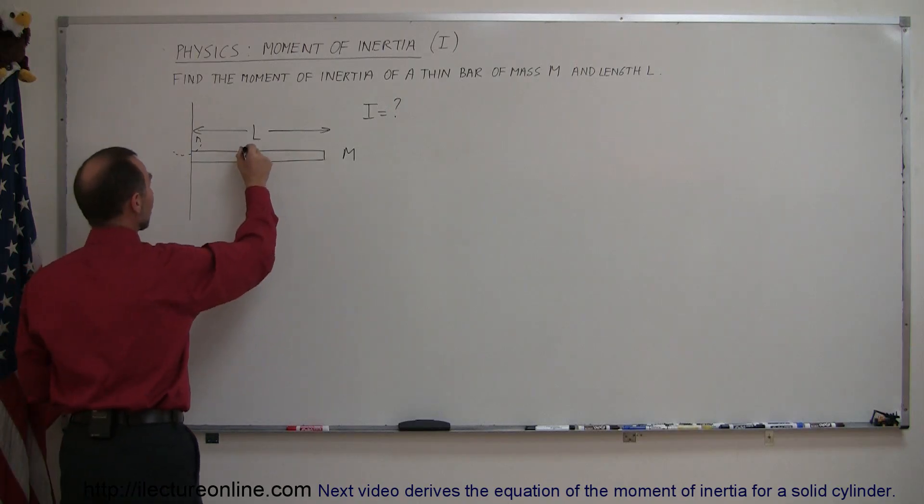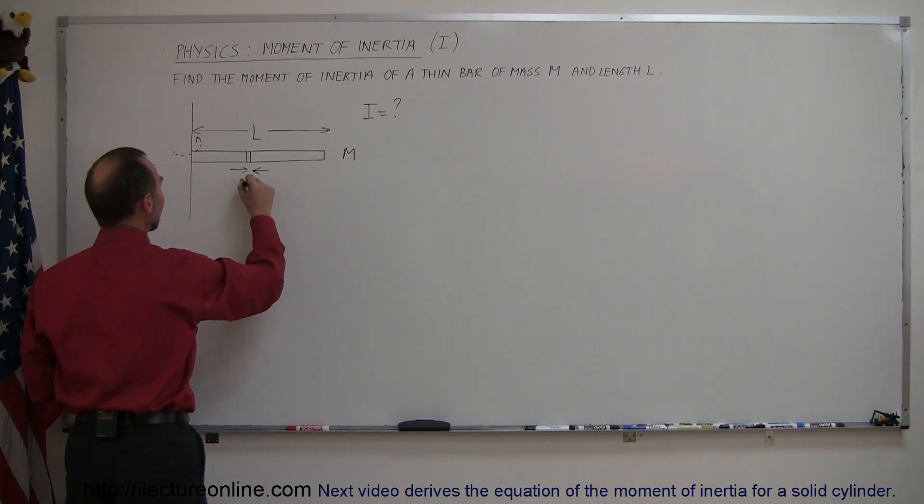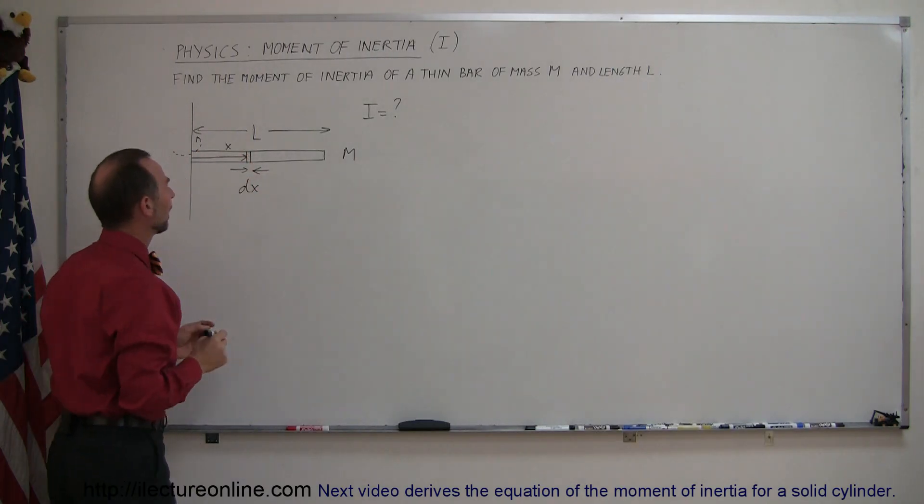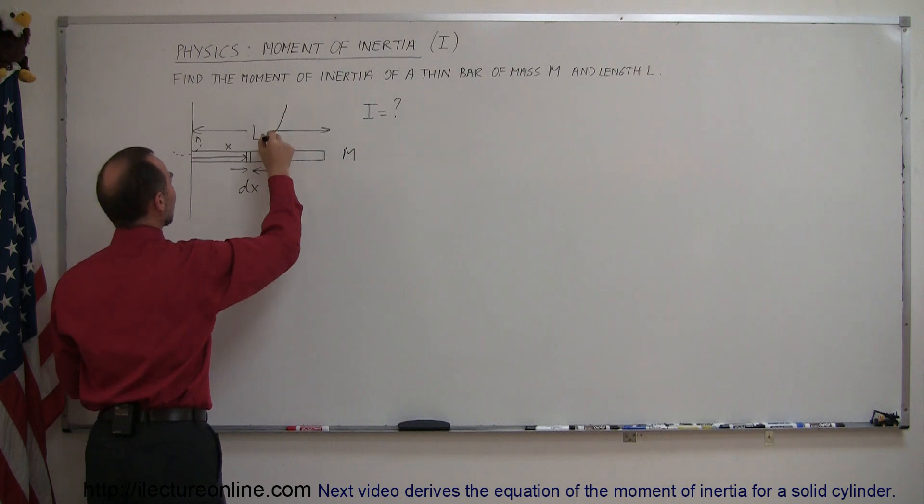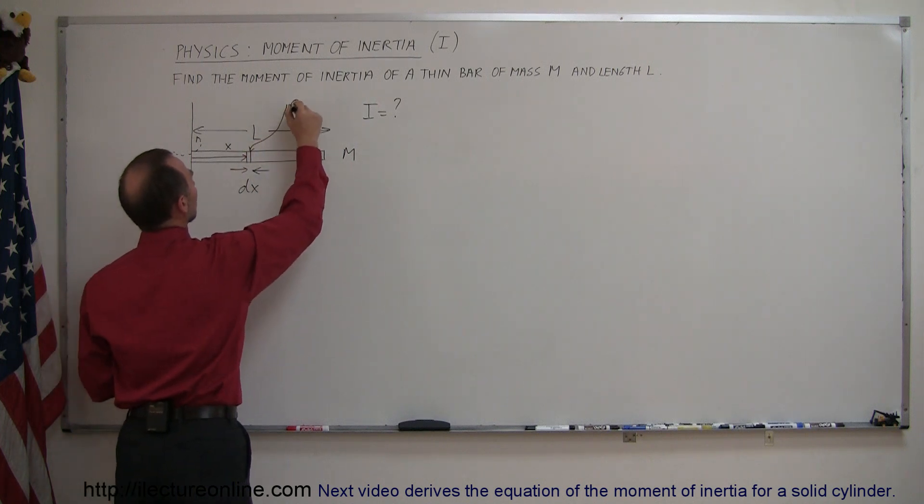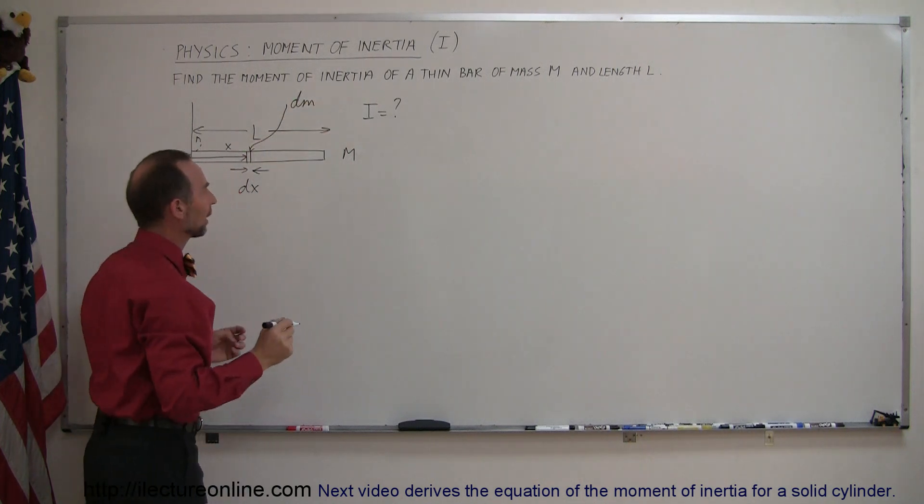Let's imagine we have a small little segment of this bar, like that. Let's say that the thickness of that little segment is a small little dx, and let's say that this segment is a distance x away from the point of rotation, and that little segment has a small amount of mass, let's call it dm.